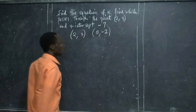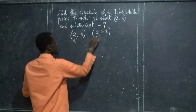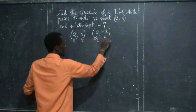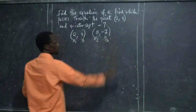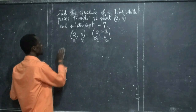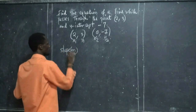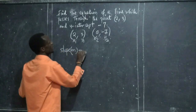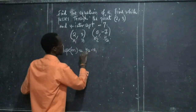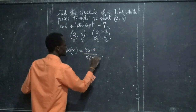Now we have two points. We label them: x1, x2, y1, y2. From here, you start with finding the slope, that is m. m is equal to y2 minus y1 over x2 minus x1.